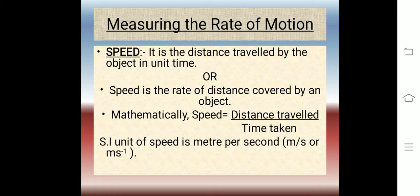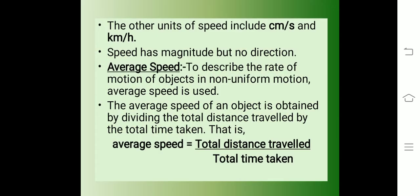What is the SI unit of speed? We can easily find it using the mathematical equation. Speed equals distance divided by time. The SI unit of distance is meter and the SI unit of time is second. Therefore, the SI unit of speed is meter per second. Other units of speed include centimeter per second and kilometer per hour.